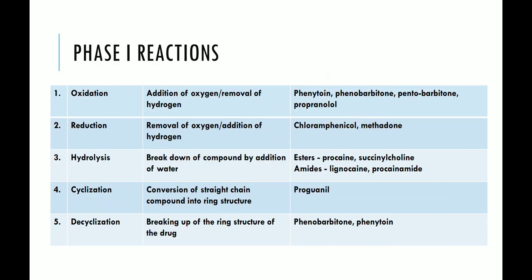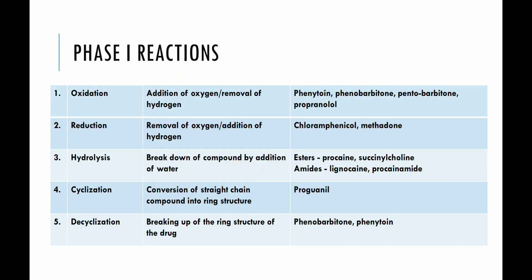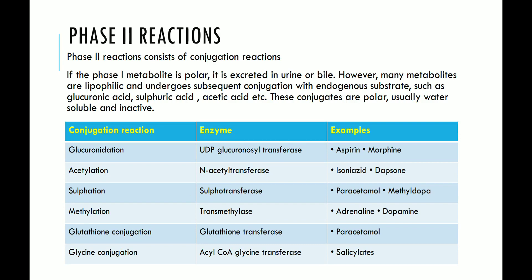These are the five types of phase 1 reactions in the metabolism phase. Now we will see phase 2 reaction. Phase 2 reaction consists of conjugation reactions. If the phase 1 metabolite is polar, it is excreted in the urine or bile. However, many metabolites are lipophilic and undergo conjugation with endogenous substrates such as glucuronic acid and sulfuric acid. These conjugates are polar, usually water-soluble and inactive.